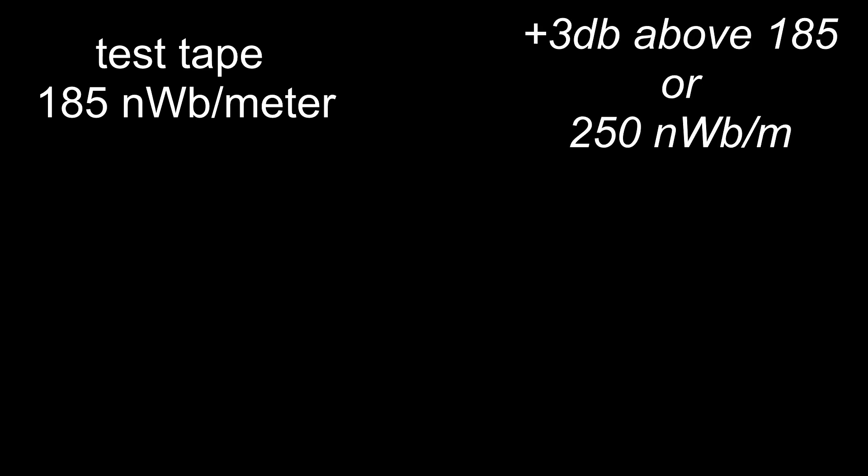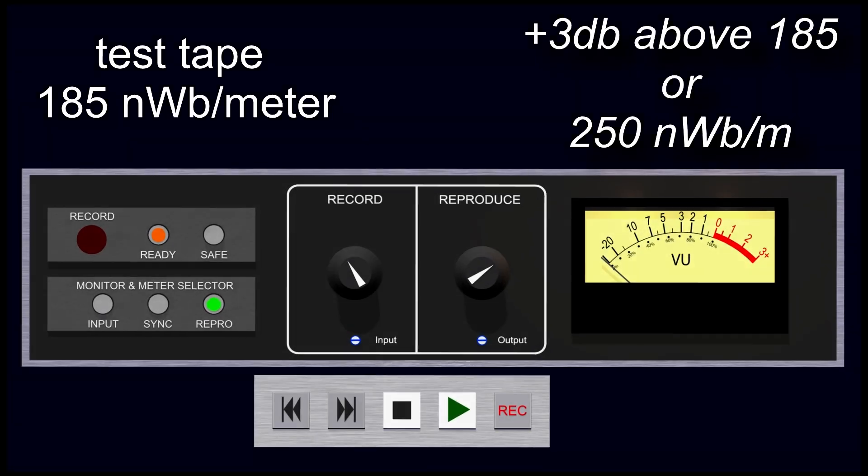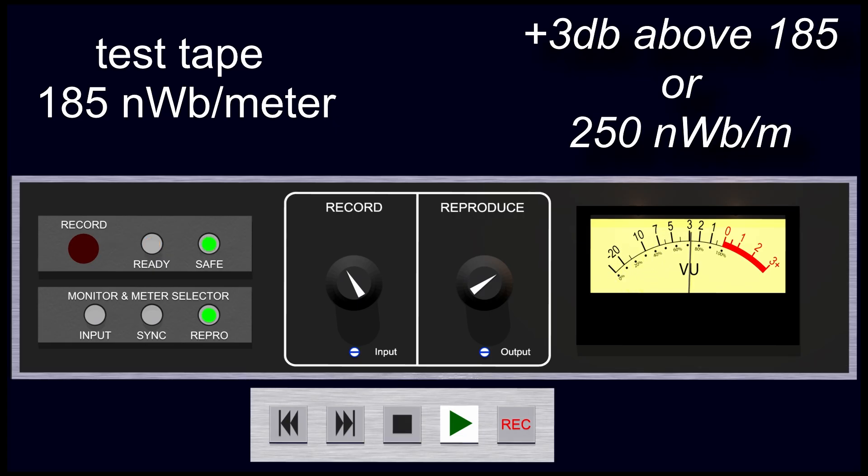If we wanted to use the same 185 nanoweber per meter test tape for this 250 nanoweber per meter alignment, we would turn our playback level down 3 dB, setting our playback level to read minus 3 on the VU meter. Then we would increase our record level by 3 dB to 0 VU. This way we're getting the same level going in and out of the machine, but we're recording 3 dB hotter.